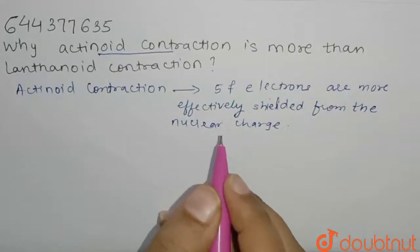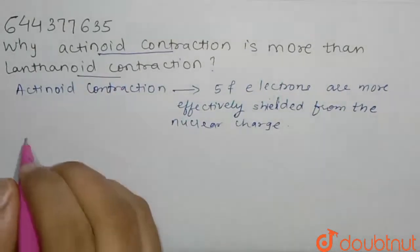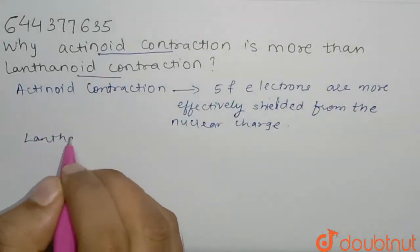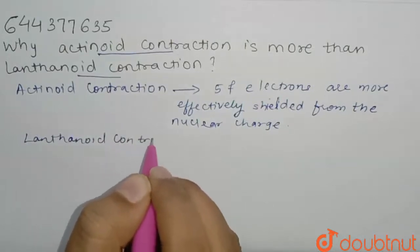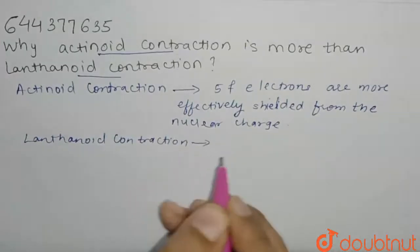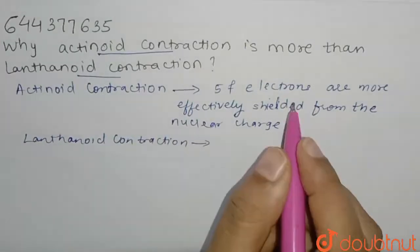And in lanthanoid contraction here, lanthanoid contraction is decrease in ionic radii.